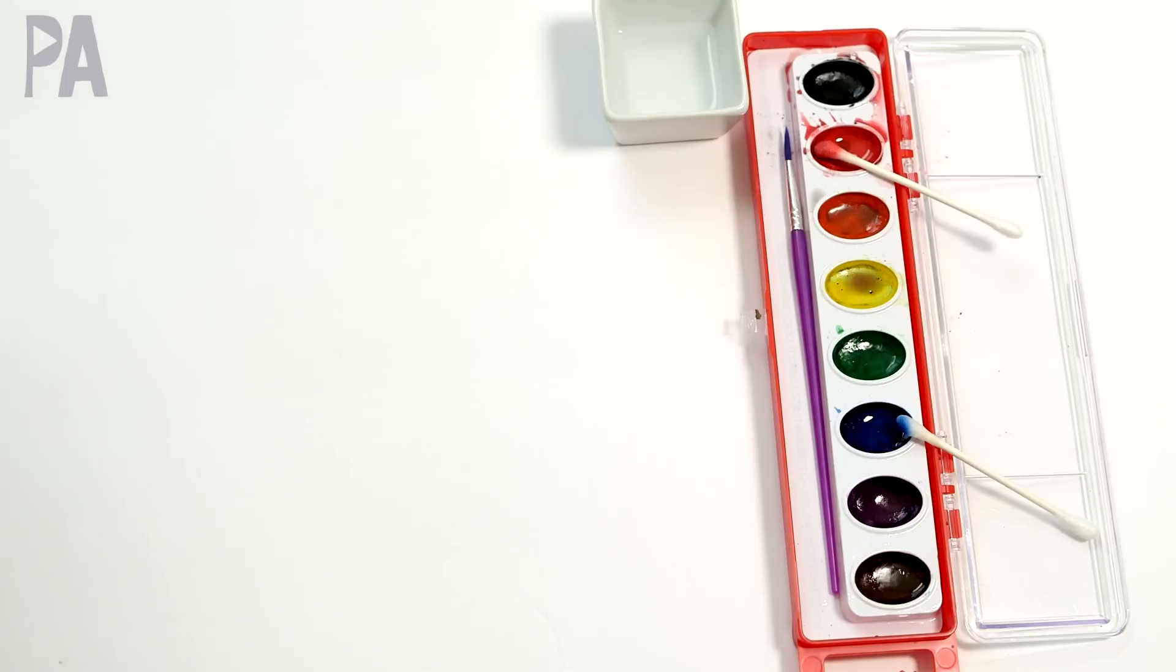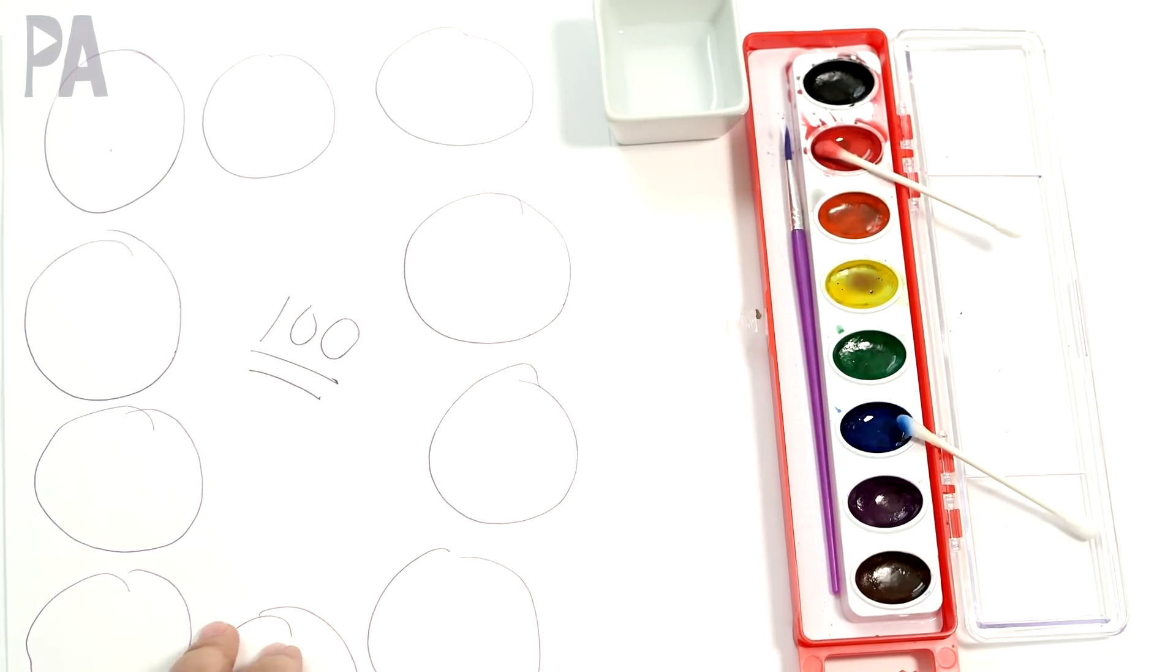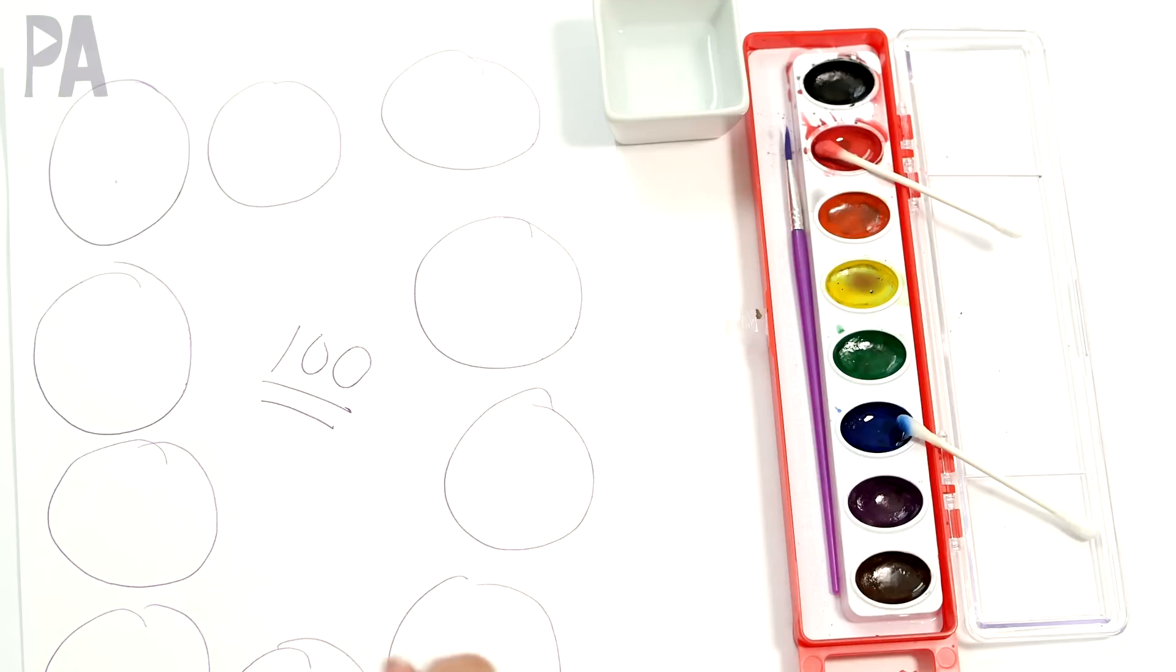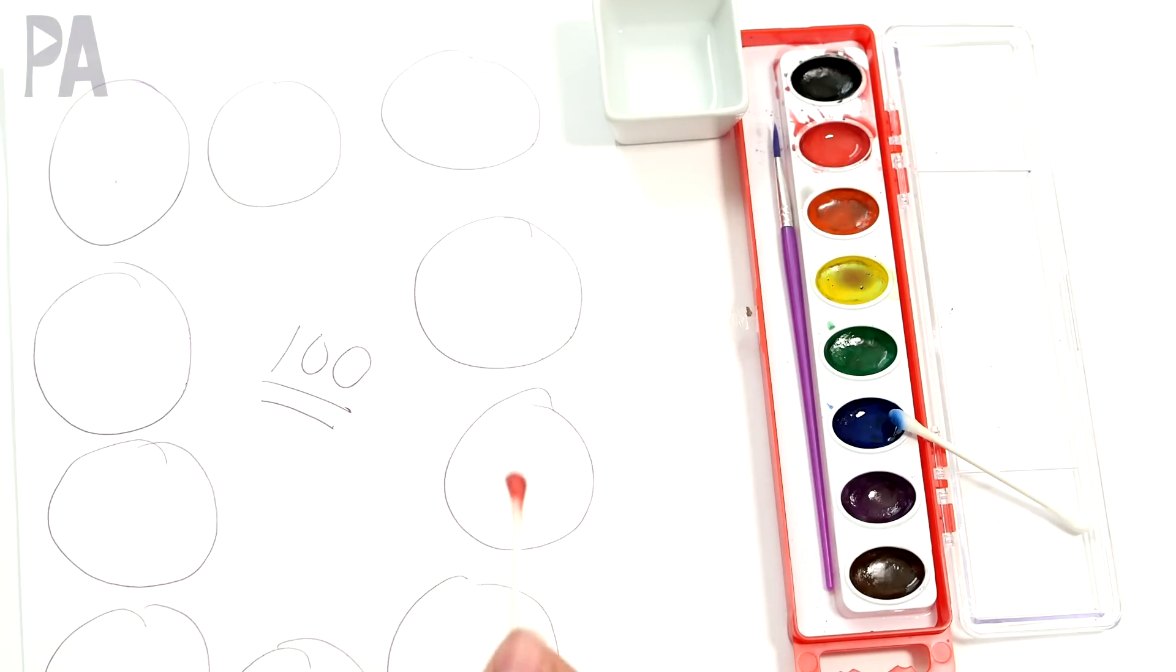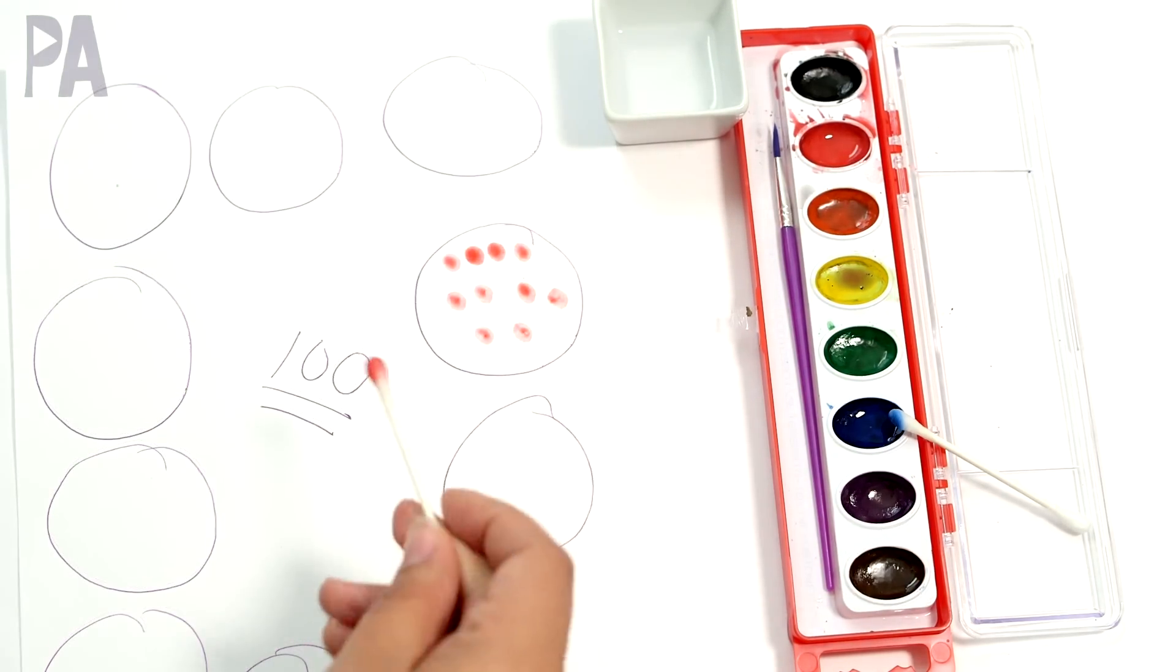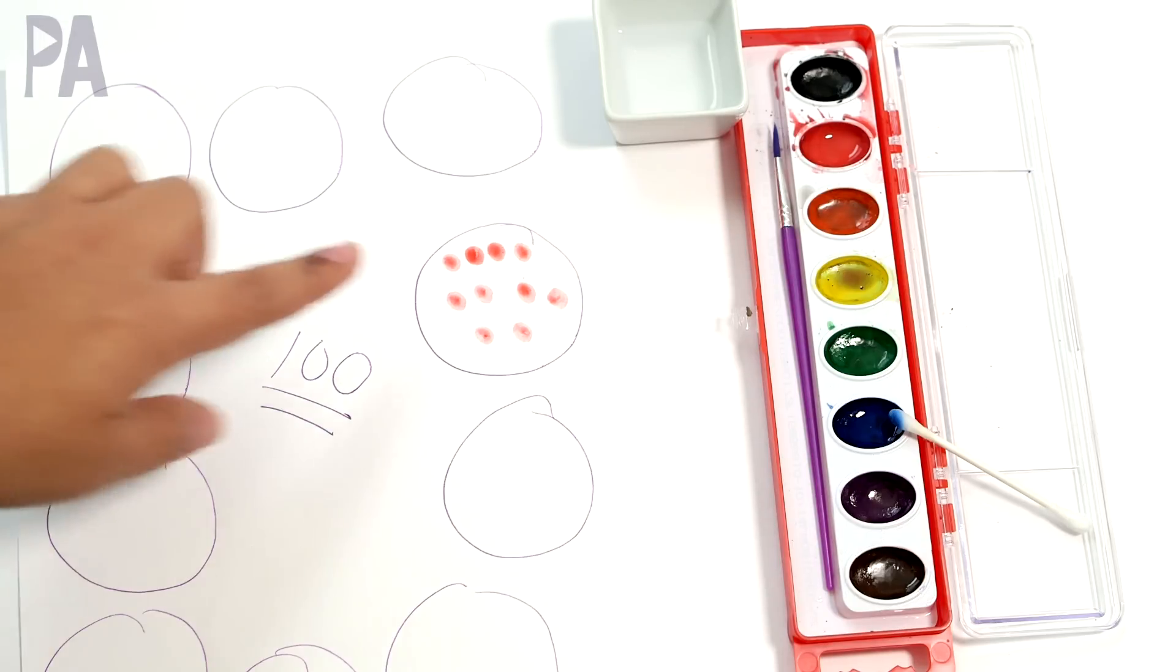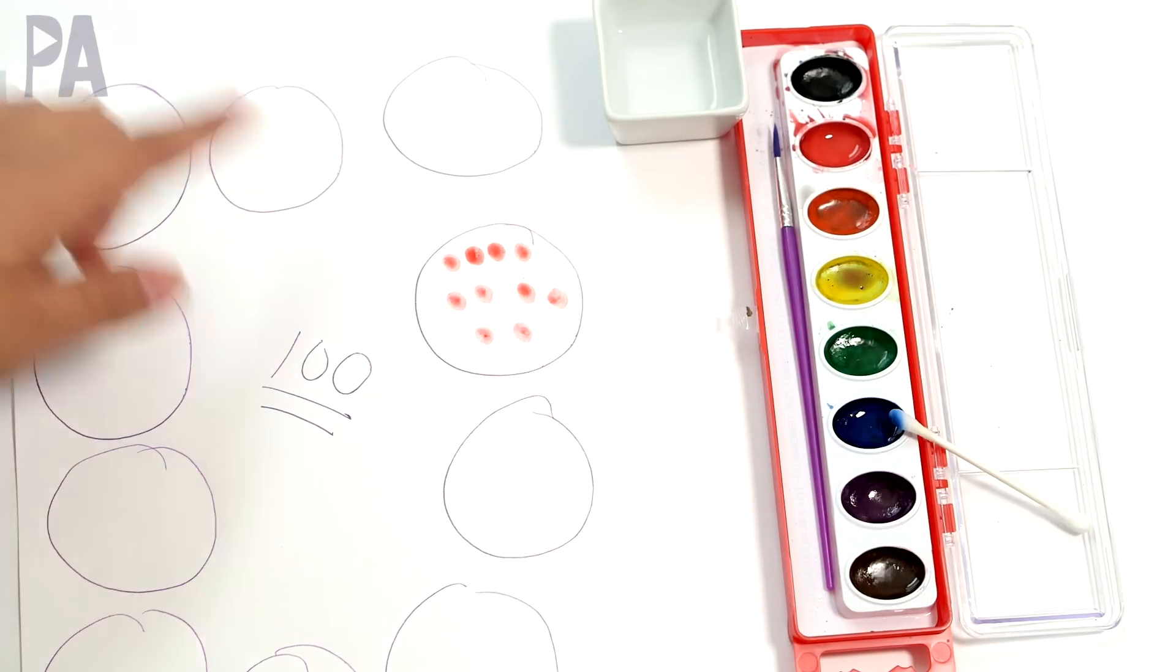So for this next activity, you don't need anything but a piece of paper and a pen, and this is going to be for counting by tens up to a hundred. So draw ten circles on your paper. You want to make them big enough so that you can do your dots in them, and then you choose a color and do ten in each circle. So this becomes a counting exercise for one through ten, and then as you fill up all of the squares, you can learn how to count by tens, 10, 20, 30, 40, all the way to 100.